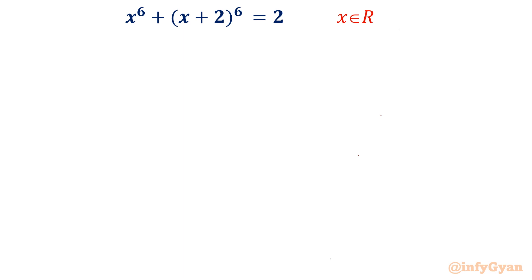Hello everyone, welcome to Infitya in this very exciting video of algebraic challenging equations. Today we are going to solve one hexic equation from Mathematics Olympiad. The equation is x⁶ + (x+2)⁶ = 2. This is one of the best questions of hexic equations.